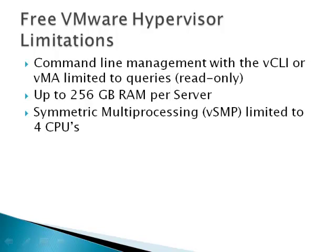You're only allowed up to 256 GB of RAM per server — wow, only 256 GB of RAM per server, that doesn't seem like much of a limitation. In symmetric multiprocessing, vSMP is limited to four CPUs. That means even if your system has 16 CPUs or 16 cores, you're only going to be able to give four of them to a virtual machine at any one given point in time.